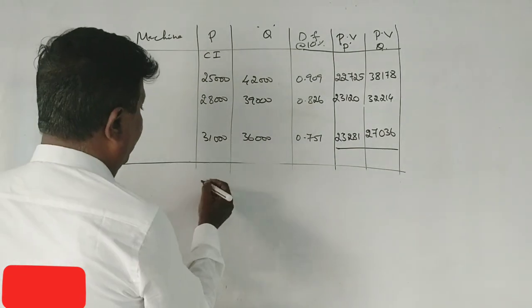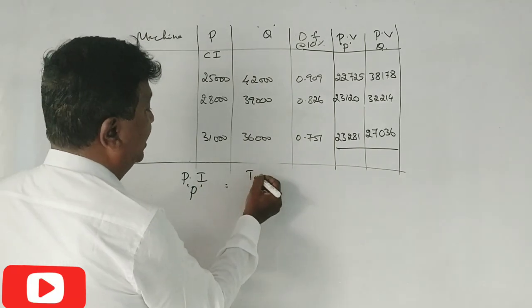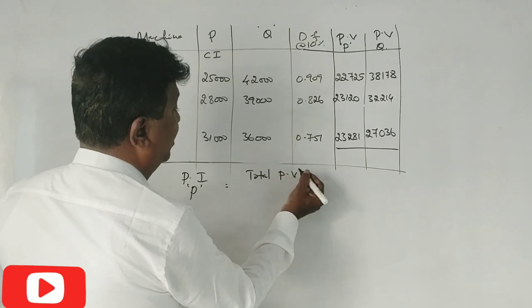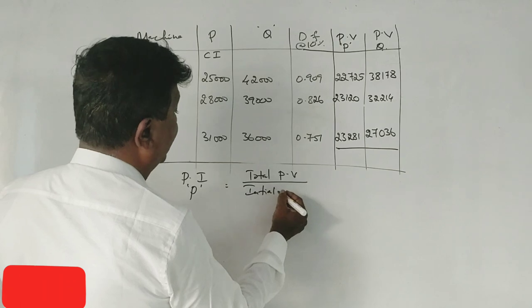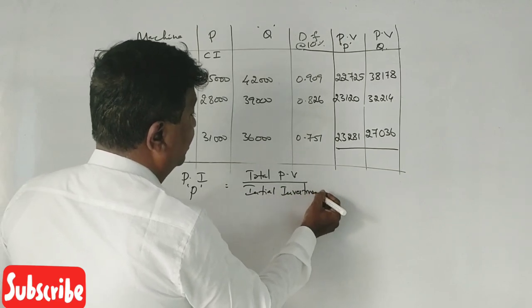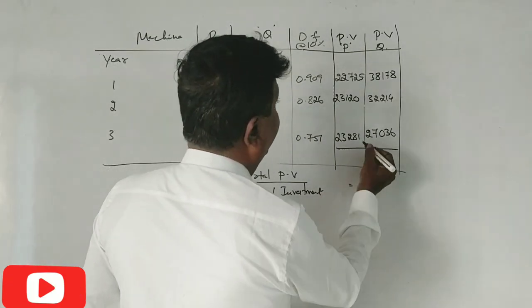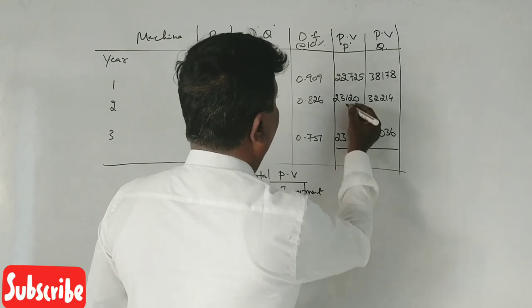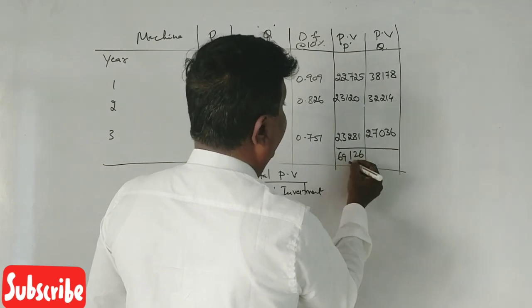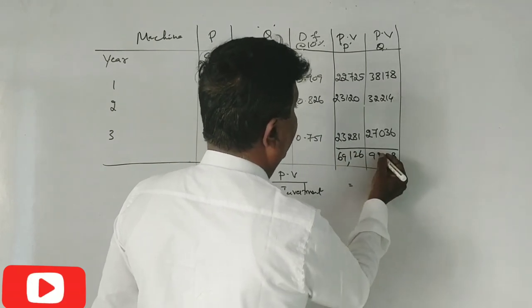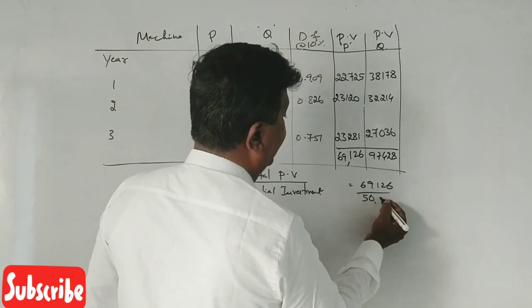Profitability Index of Machine P. So, total present value divided by initial outlay or investment into 100. 69,126, 97,428. 69,126 divided by 50,000.